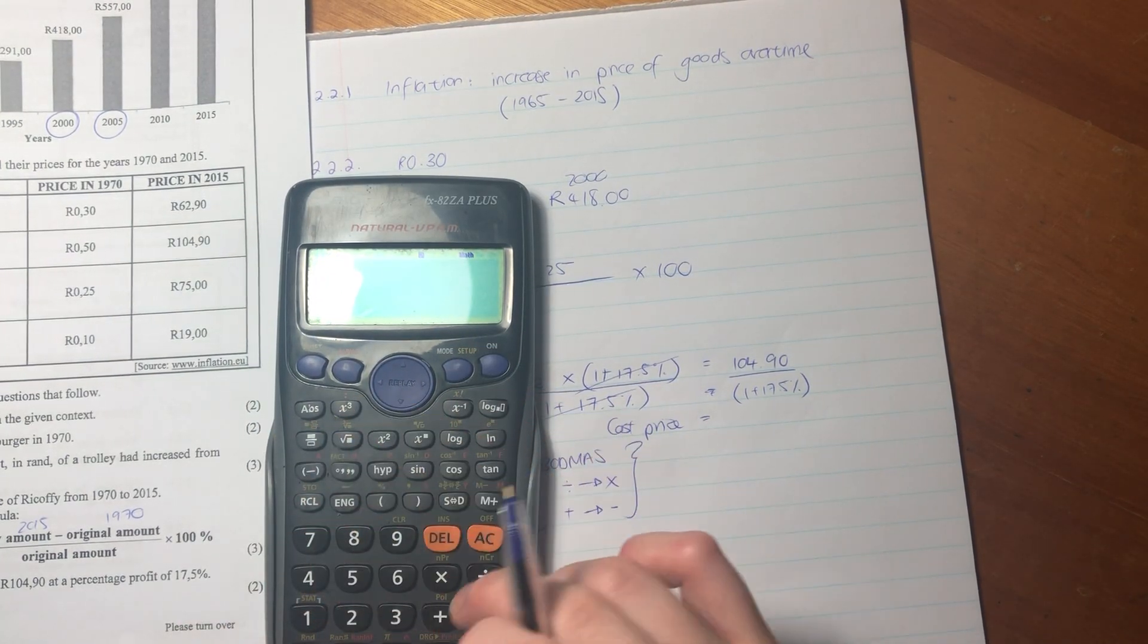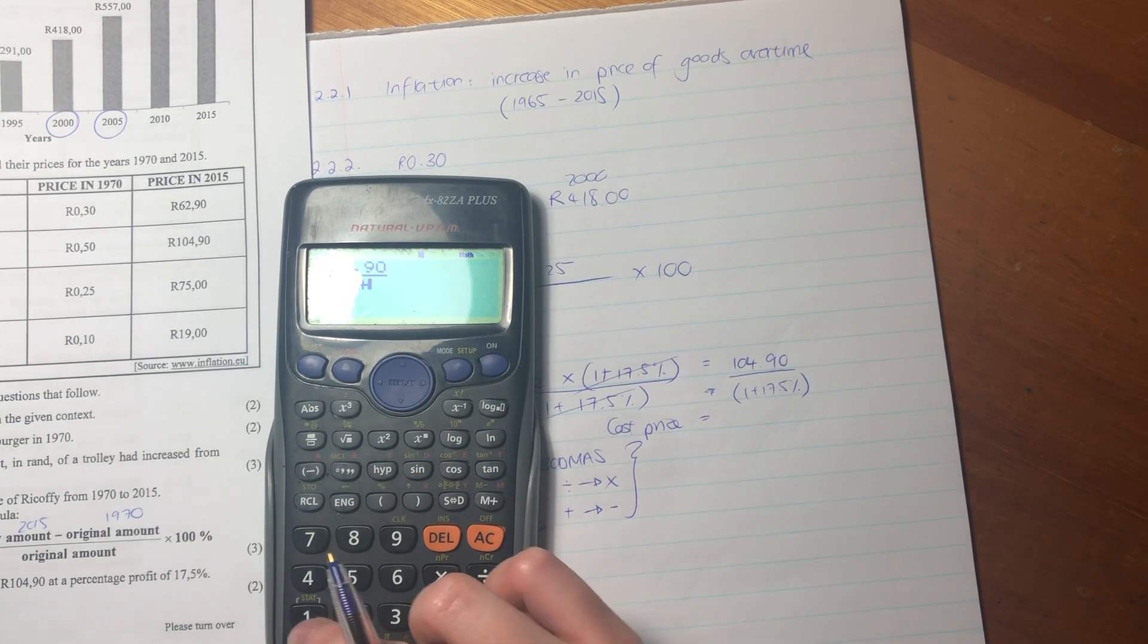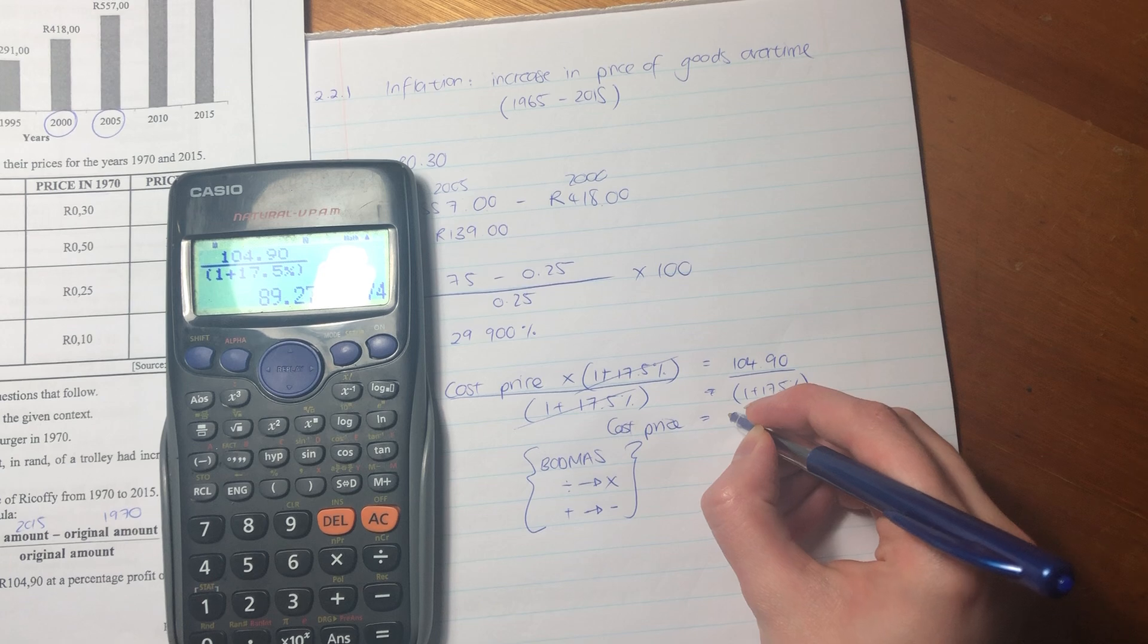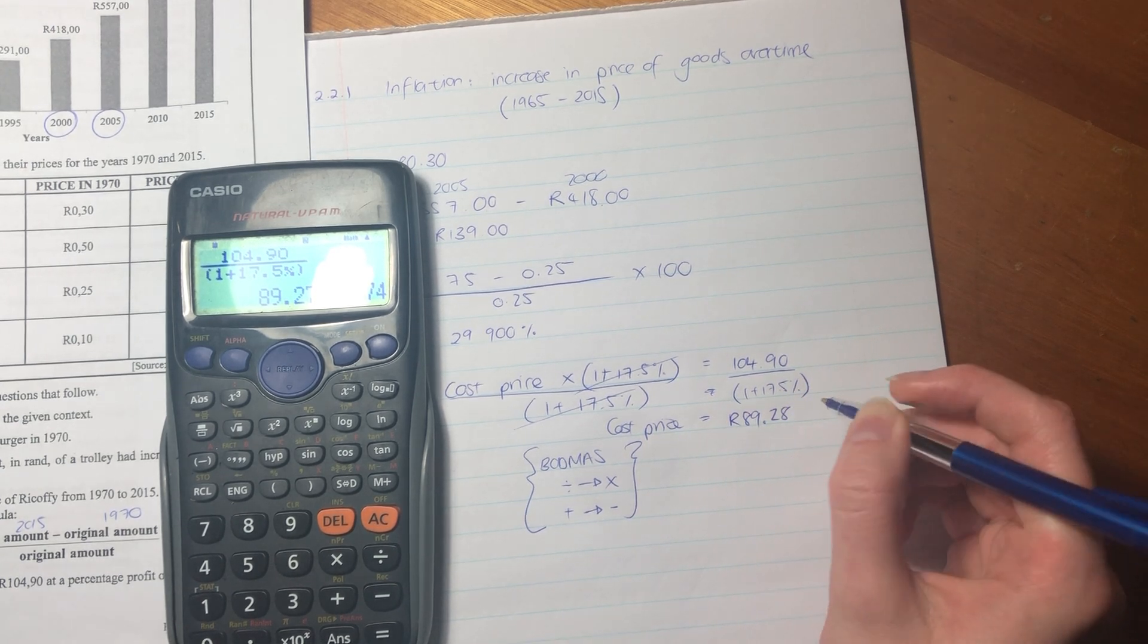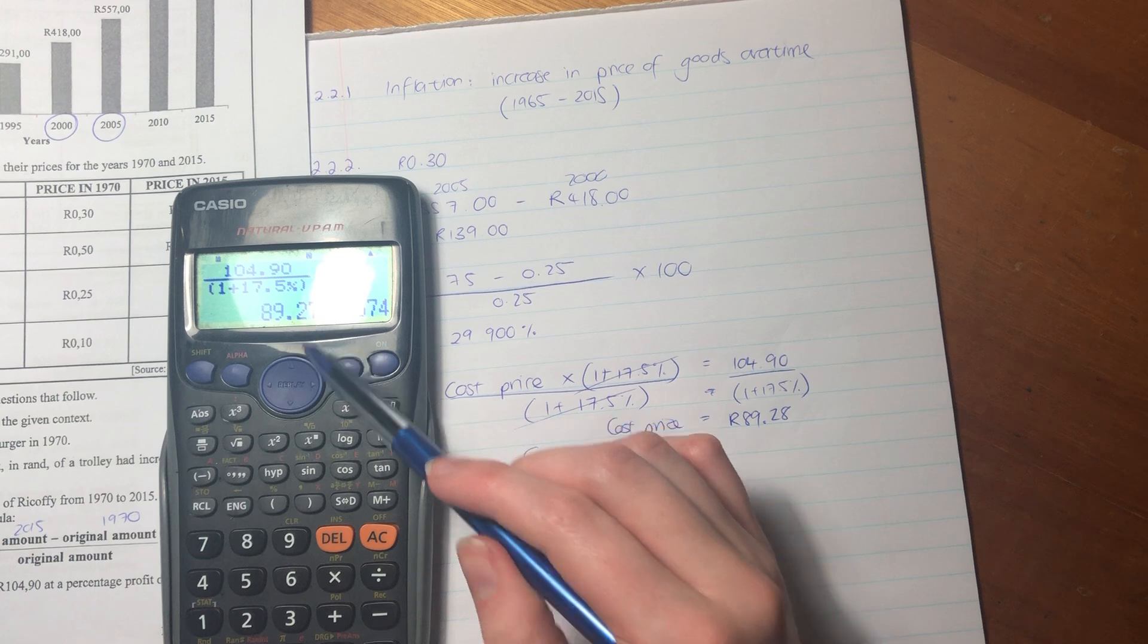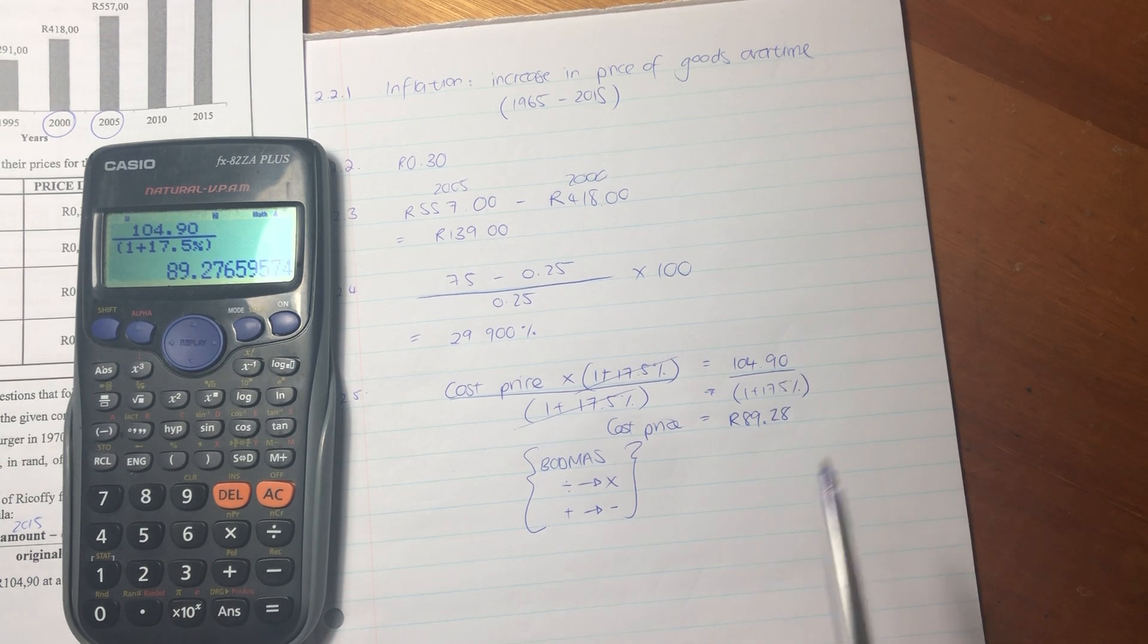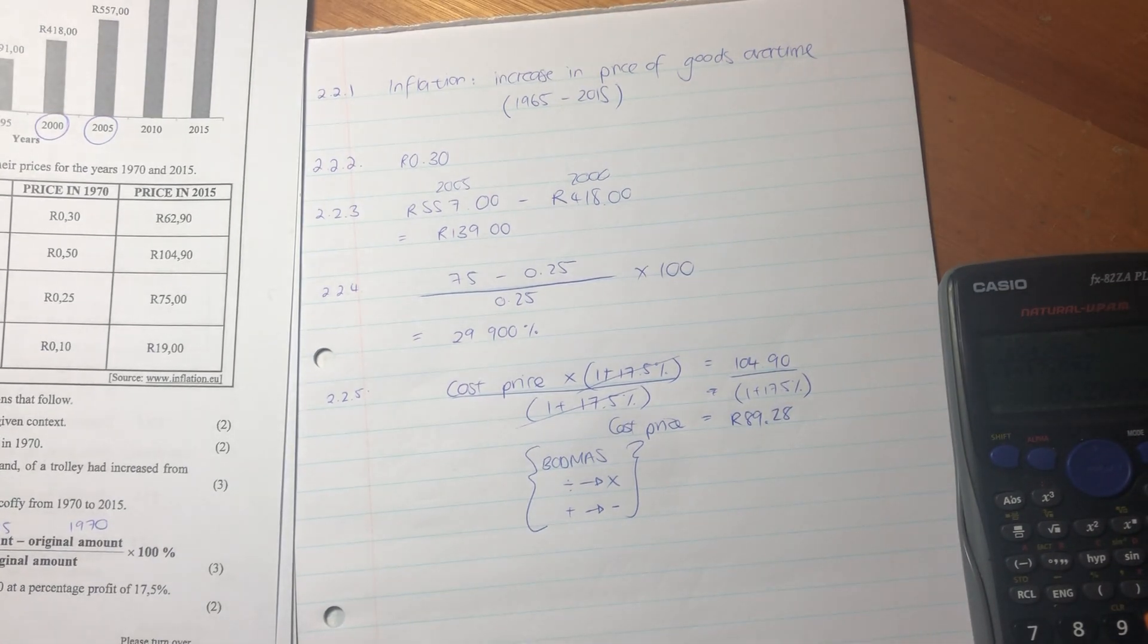And then we put it this side and we can just calculate the cost price. In these equations, what you do to one side, you have to do to the other side, similar to a ratio. Otherwise you change the actual fundamental question. So the cost price was 89 rand and 28 cents. I rounded off to two decimal places. Remember, we're talking about a currency, so you can only have two decimal places. Let's do a quick check. Is my cost price less than my selling price? Yes, it is. Good. That's what we want. And that is the end of that question.